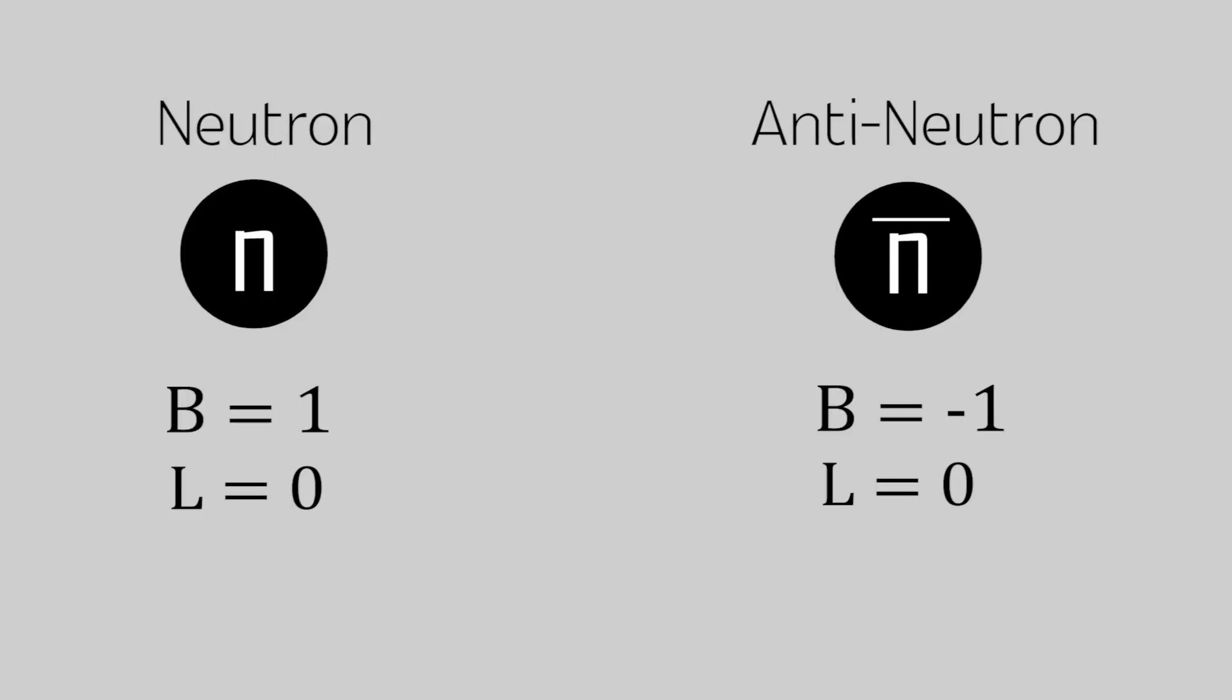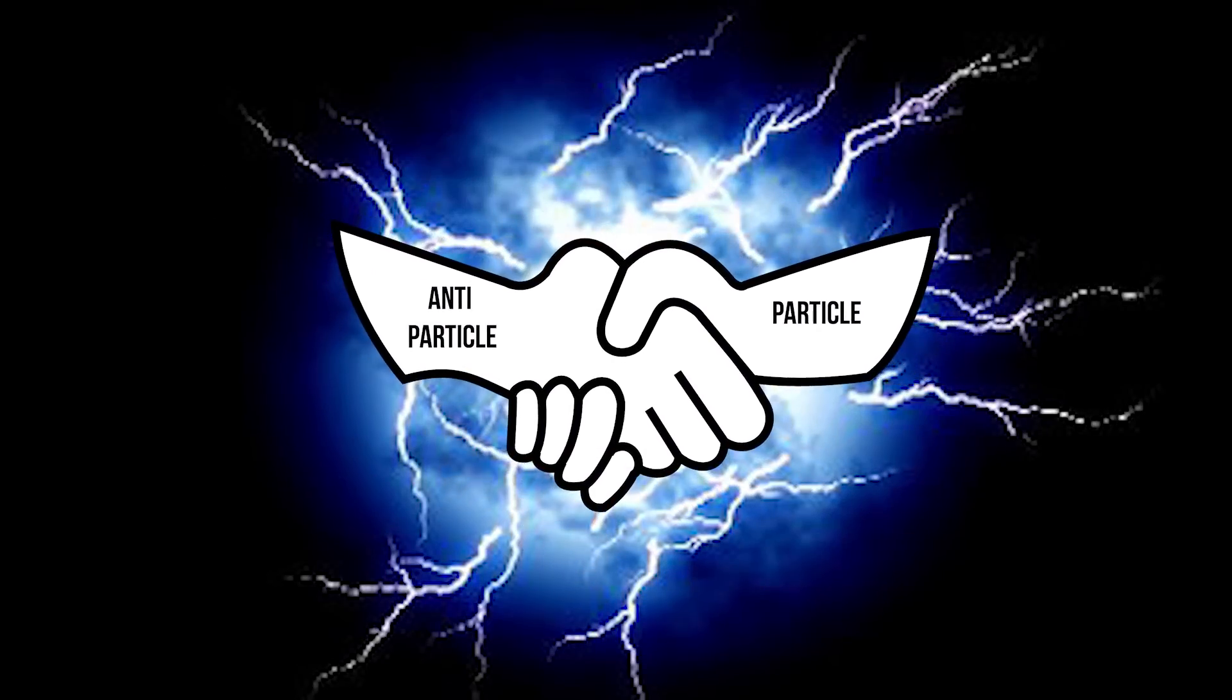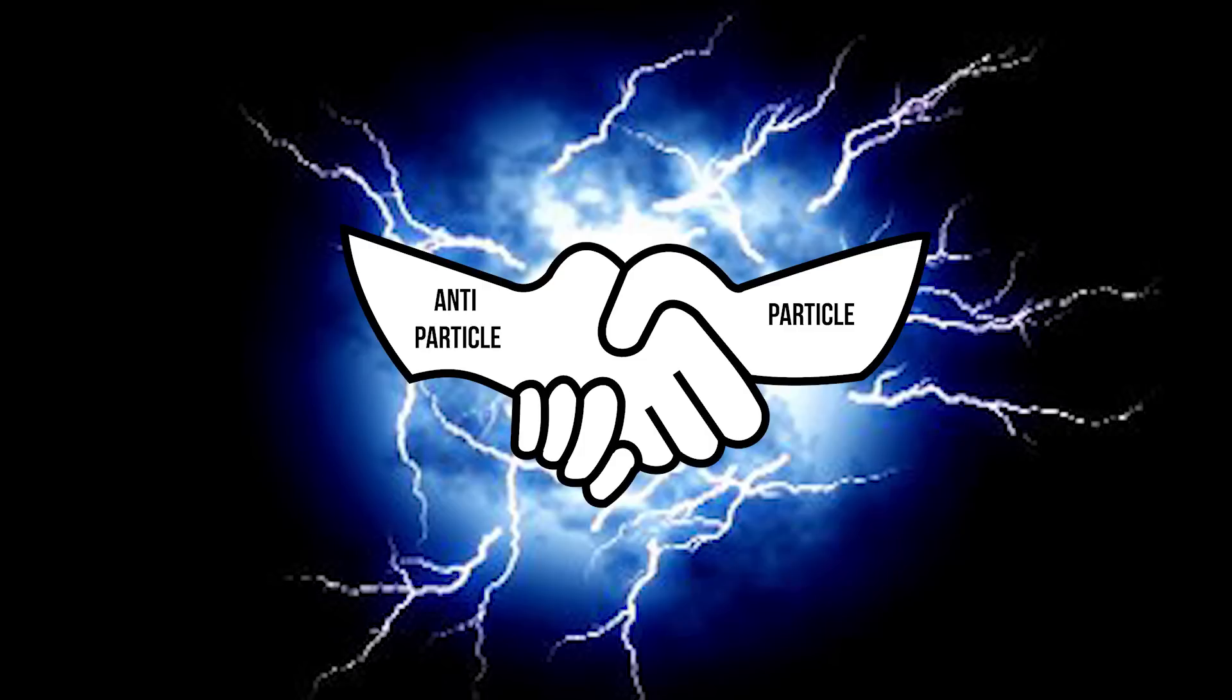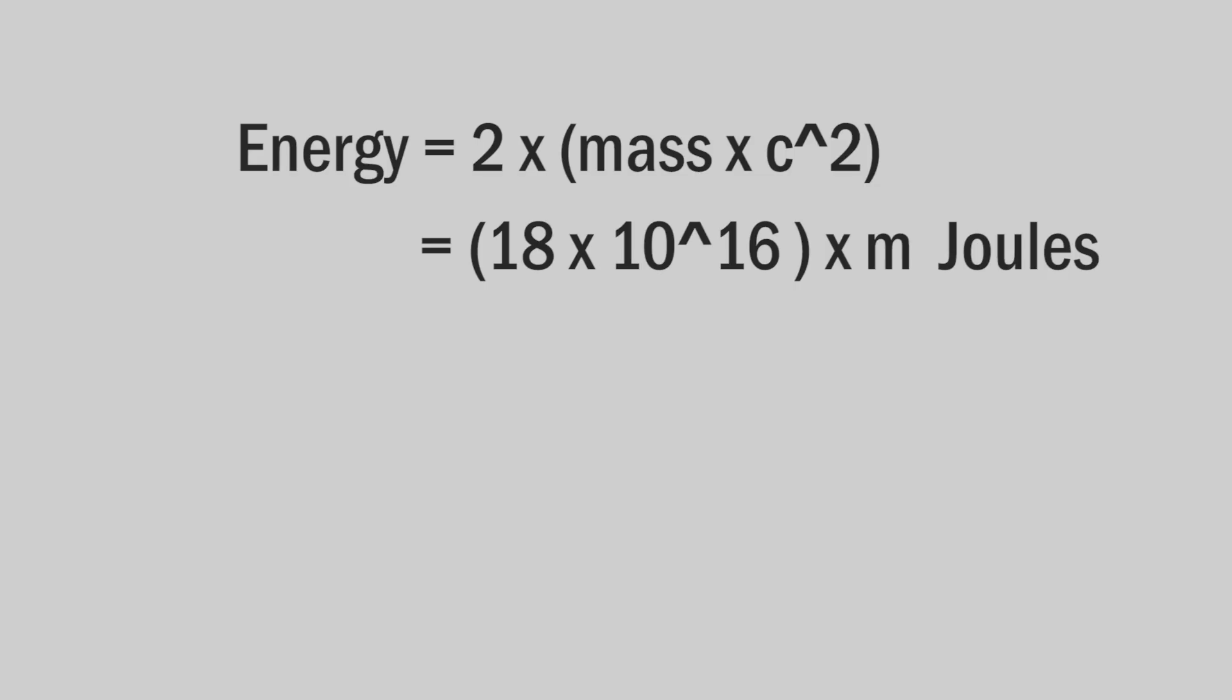The special property of antimatter is that when both antiparticle and particle meet each other they annihilate and release huge amounts of energy. For instance, when a particle and an antiparticle of mass m meet each other and annihilate, the energy released would be equal to two times mc squared, which is quite huge.